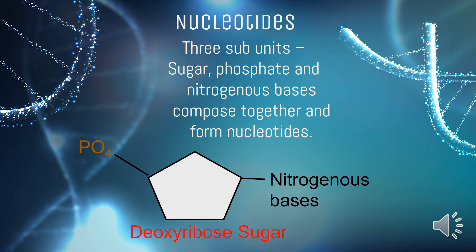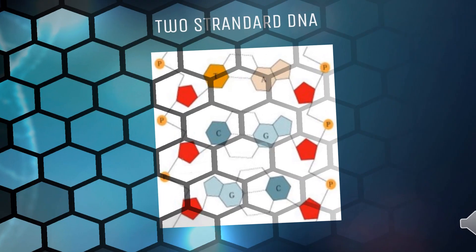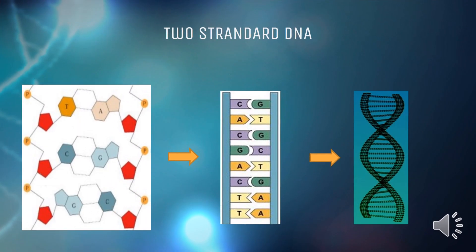Nucleotides are composed of three subunit molecules: a nucleobase, a 5-carbon deoxyribose, and a phosphate group consisting of one to three phosphates. The four nucleobases in DNA are guanine, adenine, cytosine, and thymine. In RNA, uracil is used in place of thymine. The two strands that make up a DNA molecule are linked through hydrogen bonds between their nitrogenous bases. When the spiral DNA molecule is untwisted, these base pairs look like rungs on a ladder. The spiral DNA molecule is described as having a double helix shape.